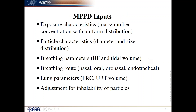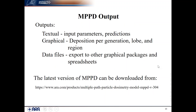What are the inputs to MPPD? Exposure characteristics such as mass, number, and concentration. Particle characteristics such as diameter and size distribution. Breathing parameters such as breathing frequency, tidal volume, and breathing routes — nasal, oral, oronasal, and endotracheal. Lung parameters such as FRC, head volume, and an adjustment for inhalability.